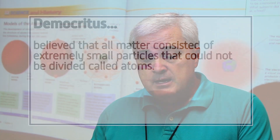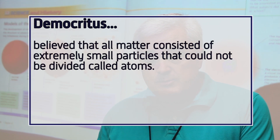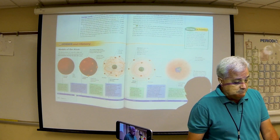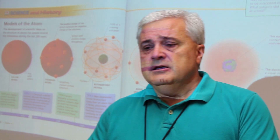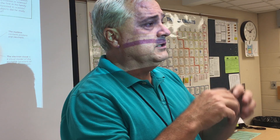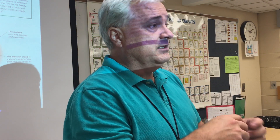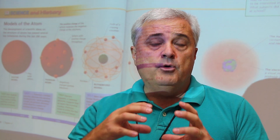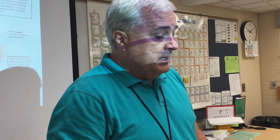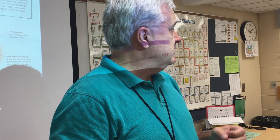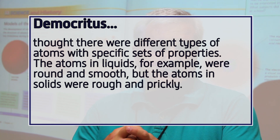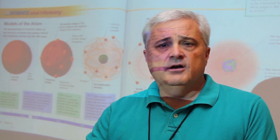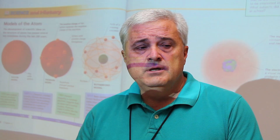Democritus said that matter consisted of extremely small particles that could not be divided. He called these atoms, from the Greek word 'atomos,' which means uncut or indivisible. His idea was that if you took a substance and continually divided it, you'd eventually reach a point where you couldn't divide it anymore — that point he called the atom. He also said that solid molecules were prickly and stuck together, while liquid molecules were smooth and slid around amongst themselves.